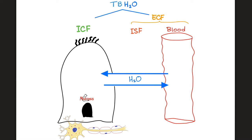Two-thirds of your body is made of water — this is total body water. Most of it is in the intracellular fluid; some is in the extracellular. The extracellular is divided between the blood and the interstitial fluid. Depending on which compartment is more osmotically active and has higher osmolality, water can go this way or that way — water will go to the more concentrated compartment.